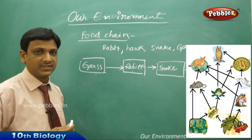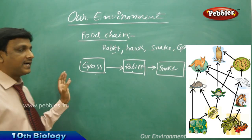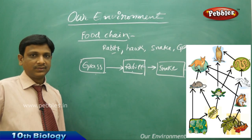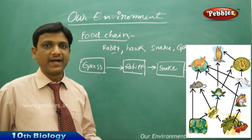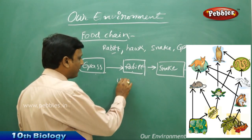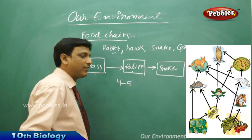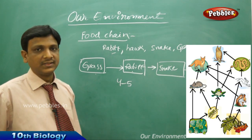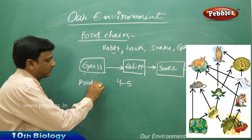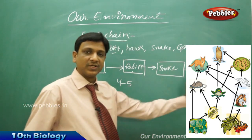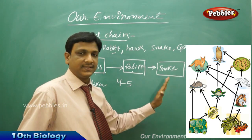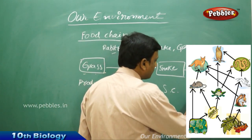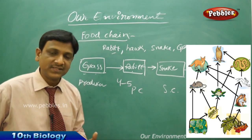Now let us identify some important points from this food chain. If you observe food chains in your surroundings, you will find most food chains are short, having only four to five organisms. Another important point: food chains begin with a producer and proceed to consumers. In the consumers there is a grading — primary consumer, secondary consumer, and tertiary consumer.